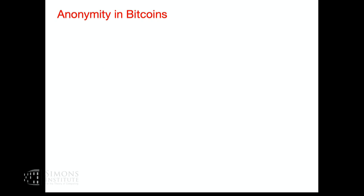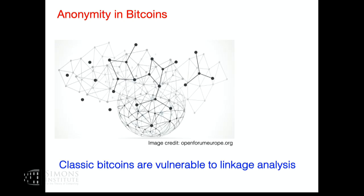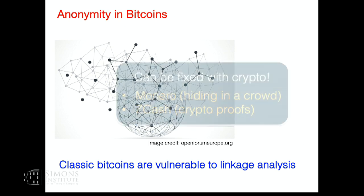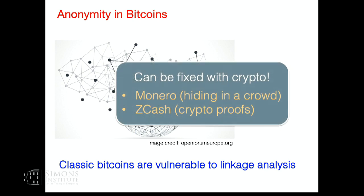Anonymity was one of the reasons why cryptocurrencies got popular—because of the promise of anonymity. But as we know, classical bitcoins are not anonymous. In fact, there are companies that do linkage analysis to de-anonymize the bitcoin blockchain. Soon after, the right people started attempting to get anonymity using cryptography. More relevant here is the Zcash cryptocurrency, which employed zero-knowledge proofs for anonymity.